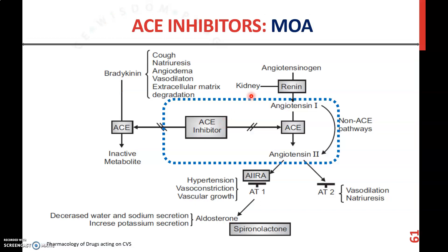A problem with ACE inhibitors is that the angiotensin converting enzyme is also essential for the conversion of bradykinin to inactive metabolites. By inhibiting this ACE enzyme, it also inhibits the conversion of bradykinin to inactive metabolites. This may produce adverse drug reactions such as cough, natriuresis, angioedema, vasodilation, and extracellular matrix degradation.